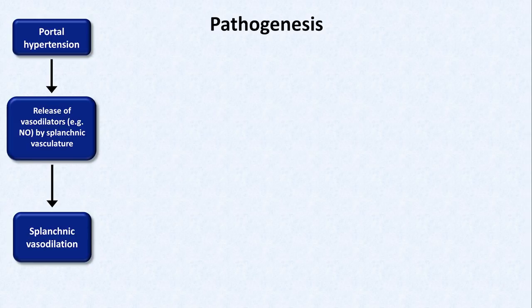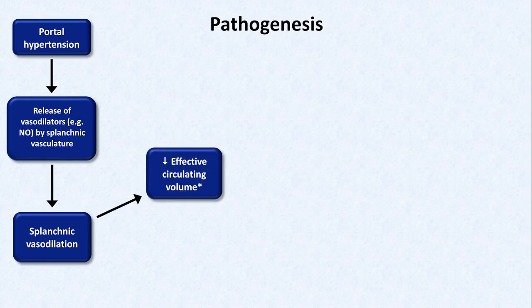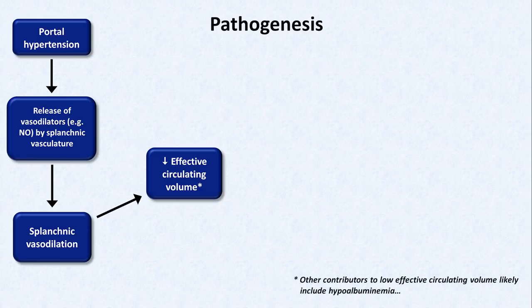Once these vasodilators are released, vasodilation follows, which leads to a decrease in the effective circulating volume — the unmeasurable volume of blood that's effectively perfusing organs and tissue. Contributing to decreased effective circulating volume is hypoalbuminemia, as decreased oncotic pressure leads to fluid leaking out of vessels. There's also cirrhotic cardiomyopathy, in which neurohormonal factors and/or inflammatory mediators associated with cirrhosis result in myocardial dysfunction.